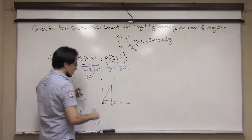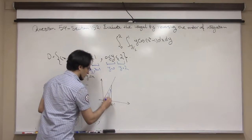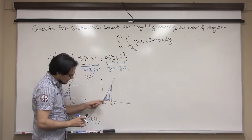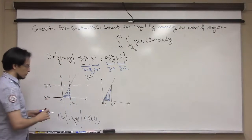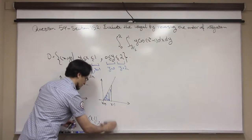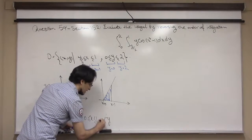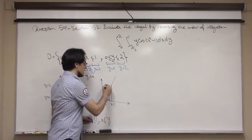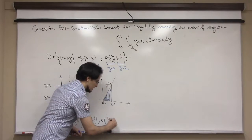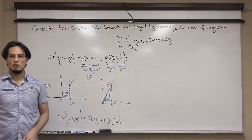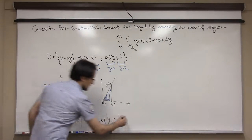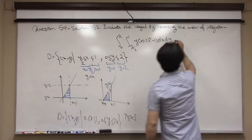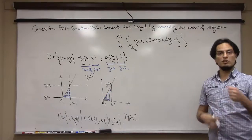For y, I draw vertical lines through the region. y is bigger than or equal to 0 — that is the line y = 0 — and y is less than or equal to the line y = 2x. So y goes from 0 to 2x. That is my region rewritten as a type 1 region.